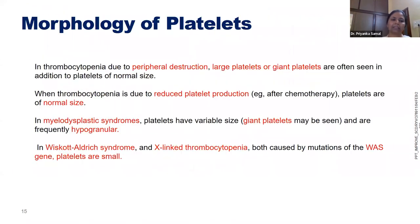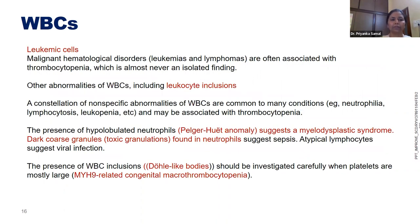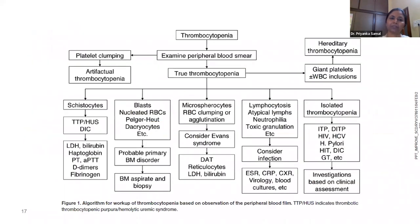We discussed platelet clumping, platelet size, granularity, and morphology. Some inherited marrow failure syndromes like Wiskott-Aldrich syndrome and X-linked thrombocytopenia show platelets that are not only decreased in number but also small in size and dysfunctional. We also look at WBC morphology to suspect MDS, aplastic anemia, or leukemia. RBC, WBC, and platelet morphology are all very important to guide the next precise investigation without unnecessary workup.